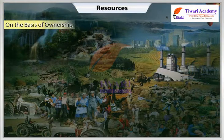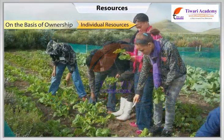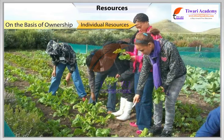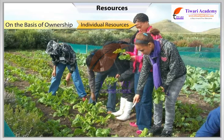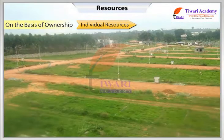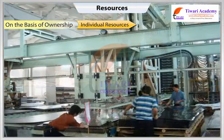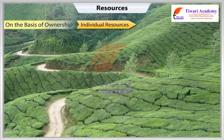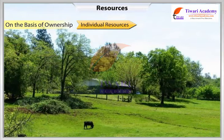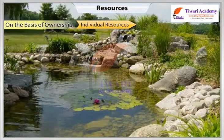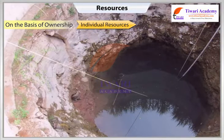On the basis of ownership, individual resources are owned privately by individuals. In villages, people own land; urban people own plots, houses, and other property. Plantation, pasture lands, ponds, and water in wells are some examples of resources owned by individuals.